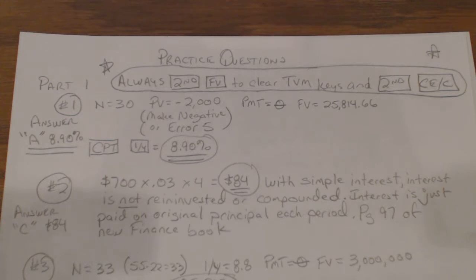30 is the number of years. The present value is $2,000. There's no payments on this, and then the future value is $25,814. Remember, with present value on a lot of these problems, the important part is you're going to want to make that present value negative. Otherwise, you get an error 5.